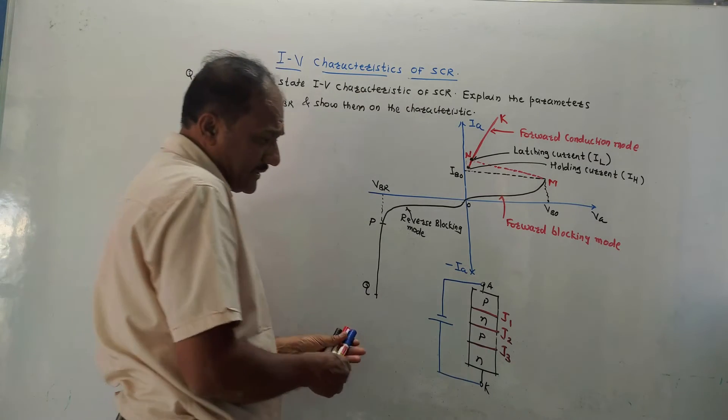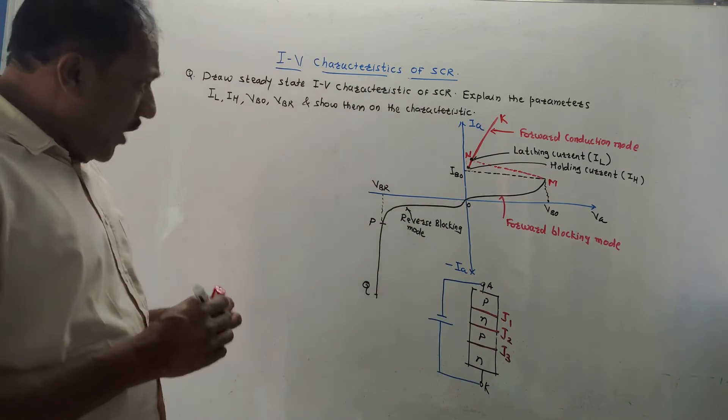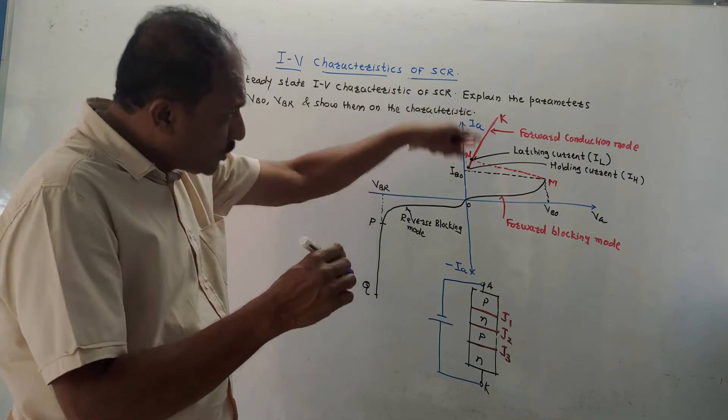This is the earlier diagram we have already discussed. There are three junctions J1, J2, and J3. Now, first, there are three modes of operations.